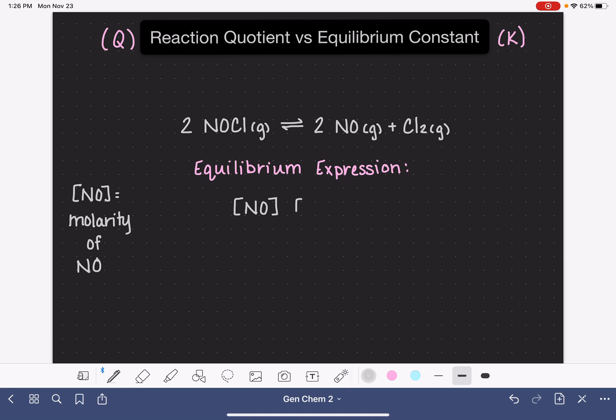We're going to take the molarities of our products, NO and Cl2, and we are going to put them in a fraction over the molarity of our reactants. In this case, we only have one reactant. There's only one thing on the bottom. In this expression,